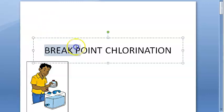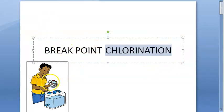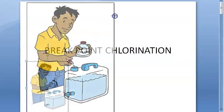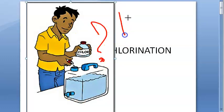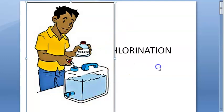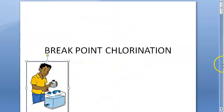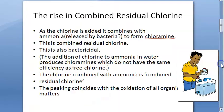In this video we want to look at breakpoint chlorination. First, understand the basics: chlorine is added to water to disinfect it. Via the Horrocks apparatus, you can determine how much chlorine you need to disinfect a given number of liters of water. Once you have that value, you go on adding chlorine.